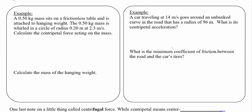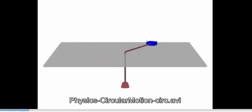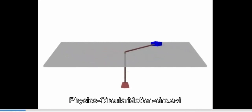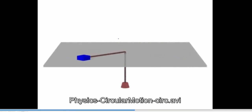Consider this situation: a 0.5 kg mass on a frictionless table is attached by a string through a hole to a hanging weight. The table mass is whirled in a circle of radius 0.2 meters at 2.3 meters per second. The blue mass on the table moves in a circle while the red hanging mass is held stationary — an interesting case where one part of the system accelerates and the other is in equilibrium.